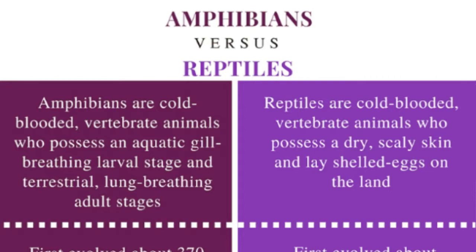Amphibians are cold-blooded vertebrate animals who possess an aquatic gill-breathing larval stage and a terrestrial lung-breathing adult stage. Reptiles are cold-blooded vertebrate animals who possess a dry, scaly skin and lay shelled eggs on the land.